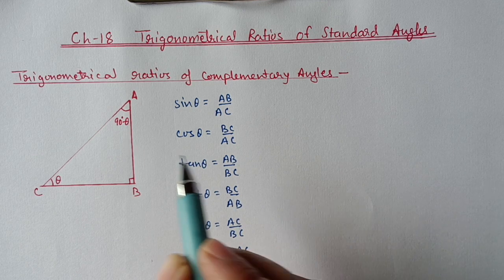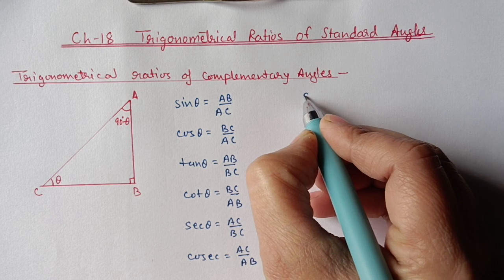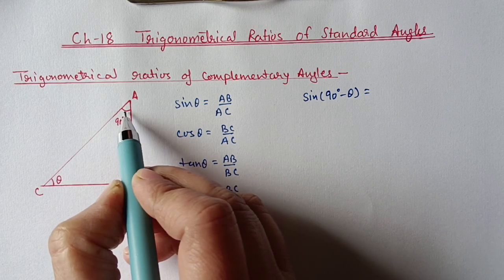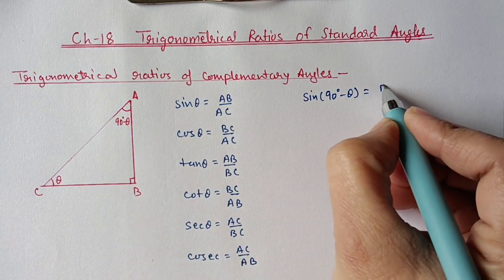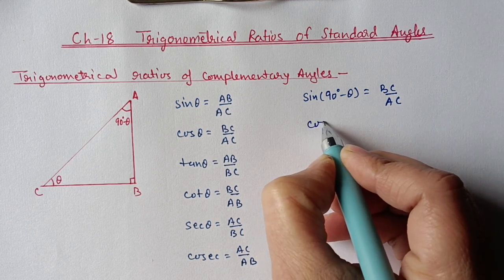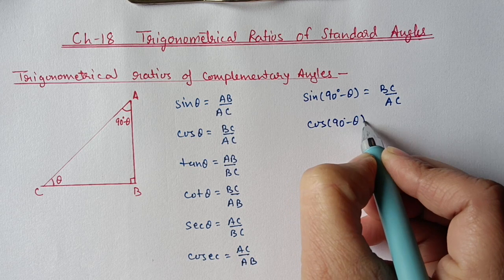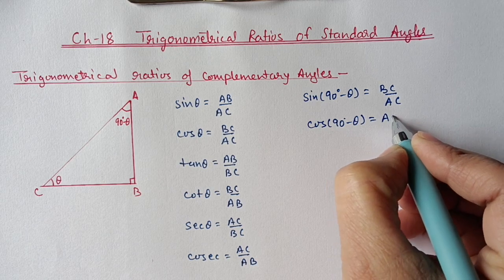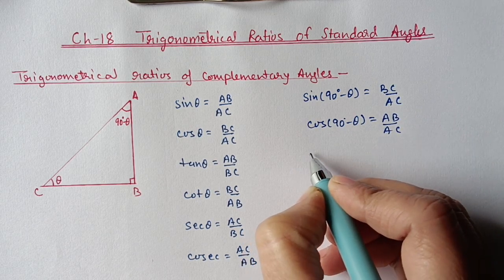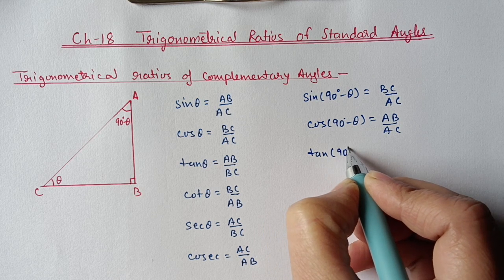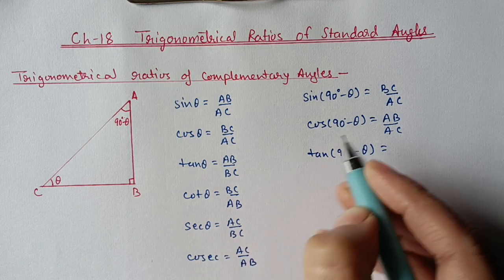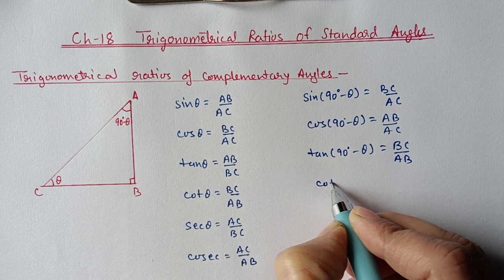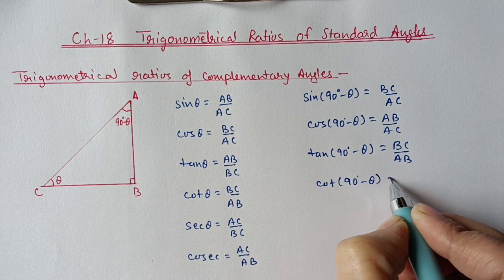Now we will calculate the same ratios for angle A, which is 90 minus θ. sin(90 − θ): for this angle the perpendicular is BC, so sin(90 − θ) = BC/AC. cos(90 − θ) = base/hypotenuse = AB/AC. tan(90 − θ) = perpendicular/base = BC/AB. cot(90 − θ) = base/perpendicular.